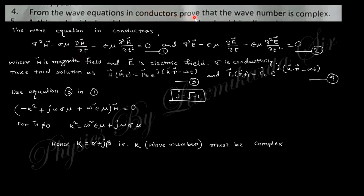From the wave equation in conductor, prove that the wave number is complex. These two are the wave equations of the conductor: the wave equation of magnetic field and the wave equation of electric field. If you consider the general solution of electric field in this form and substitute, the gradient is derivative with respect to R. You will get j²k², where j² is minus, so minus k². And del/dt gives minus jω.